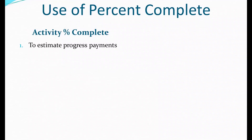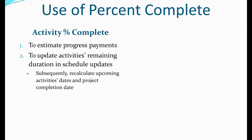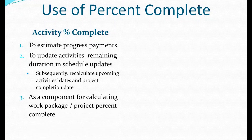Use of percent complete. If we're using the activity percent complete, we do that to estimate progress payments because it's based on the percent complete as well as the schedule of values. We use it to update activities' remaining duration — this is a very important thing, and we'll have another slide on the remaining duration. Subsequently, we want to recalculate upcoming activities' dates, start dates, finish dates, and project completion date. It has a huge impact on resources, crews, and so on.